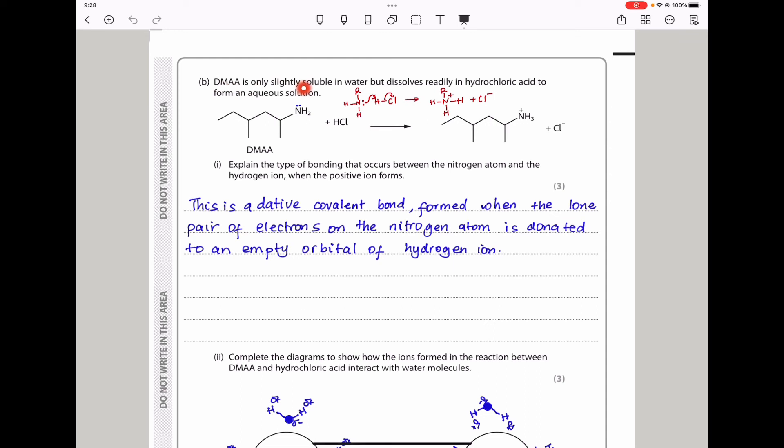DMAA is only slightly soluble in water but dissolves readily in hydrochloric acid to form an aqueous solution. This is DMAA, and here this is HCl. A reaction occurs between these two because this nitrogen has a lone pair. That lone pair is donated to this hydrogen, and the Cl breaks away, producing the products. They want you to explain the type of bonding that occurs between the nitrogen atom and the hydrogen ion when the positive ion forms. This is a dative covalent bond, formed between the lone pair of electrons on the nitrogen atom when it's donated to an empty orbital of a hydrogen ion.